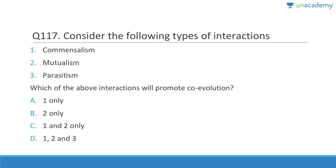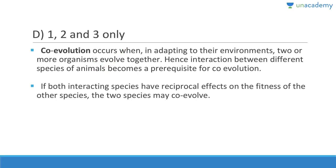Question 117: Commensalism, mutualism, and parasitism — all three promote co-evolution. In commensalism one species benefits; in parasitism one benefits while the other is harmed; in mutualism both evolve together (e.g., lichen). Parasitism example: tapeworm in humans. Commensalism example: barnacles on a whale — whale is unharmed, barnacles benefit. Answer is all three.